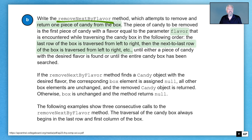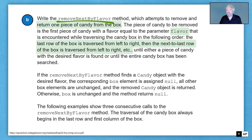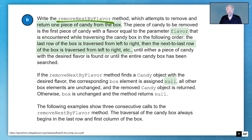If removeNextByFlavor finds a Candy object with the desired flavor, the corresponding box element is assigned null, all other box elements are unchanged, and the removed Candy object is returned. Otherwise, the box is unchanged and the method returns null.